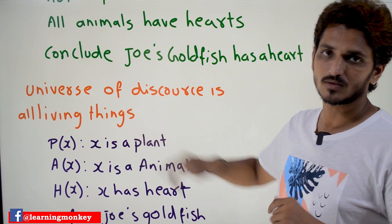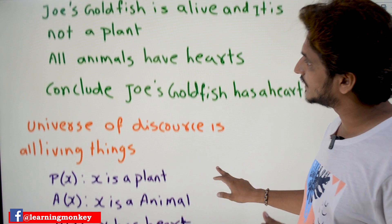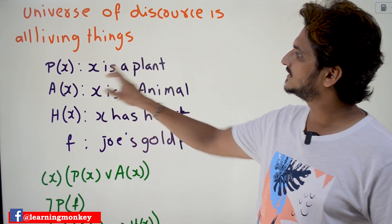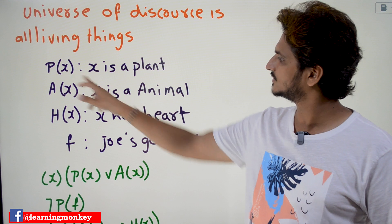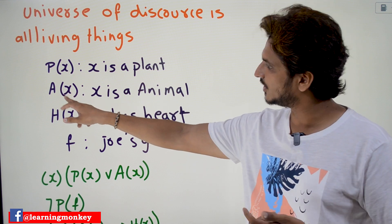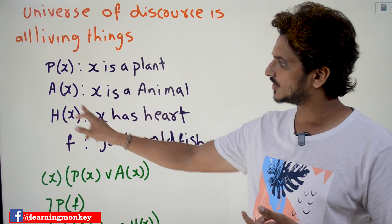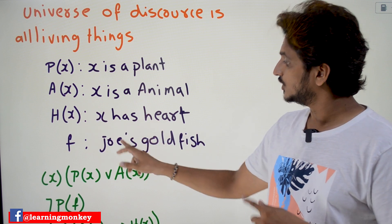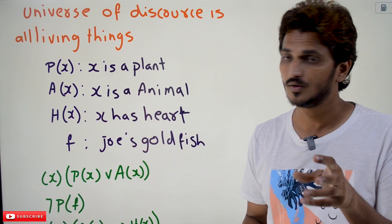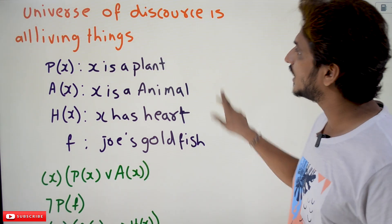Coming to the step-by-step solution, we define our predicates: X is a plant is written as P(X); X is an animal is written as A(X); X has a heart is written as H(X); and Joe's goldfish, our subject, is considered as F.